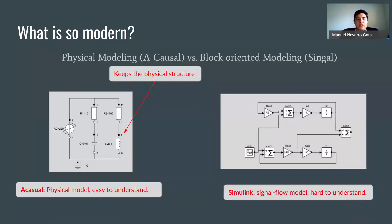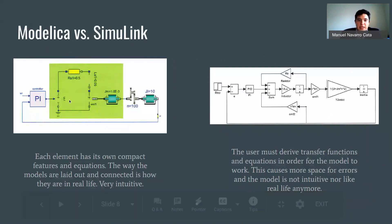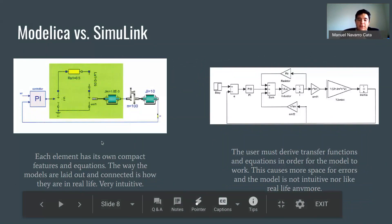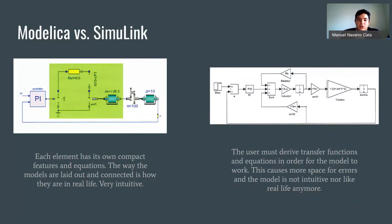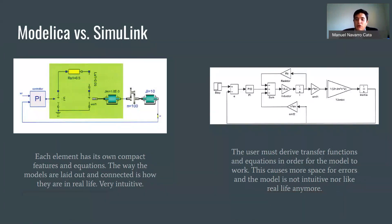So this is why it's so important. When we see a big model, for example, comparing Modelica and Simulink, we see right off the bat in Modelica that we know these two are motors, this is a gear, there's a resistor, and there's a controller. Each element has its own compact features and equations, and the way the models are laid out really reflects how it's laid out in the real world — it's very intuitive. In Simulink, the user must derive transfer functions and equations and make sure signals are flowing the right way, and this creates more space for errors.